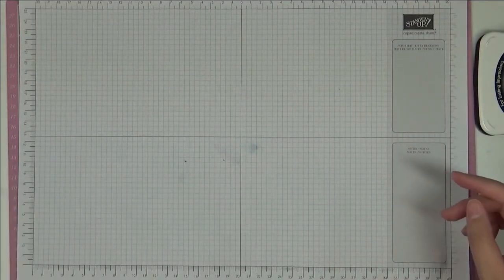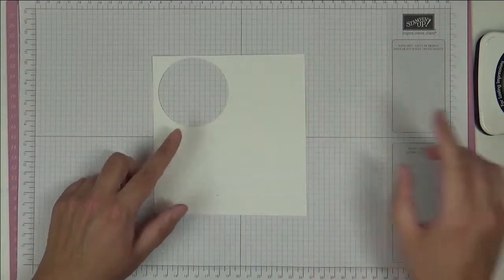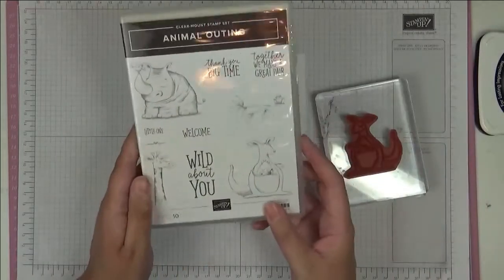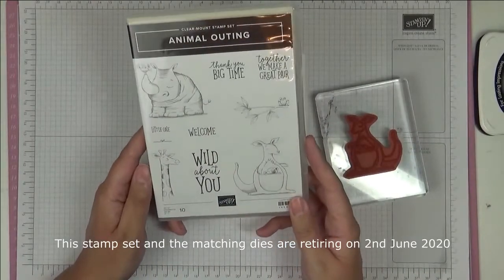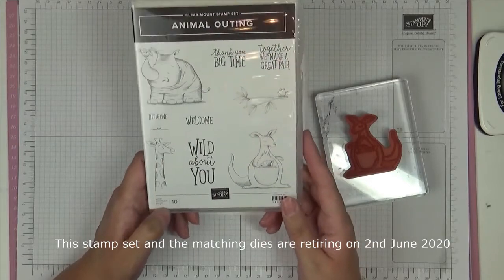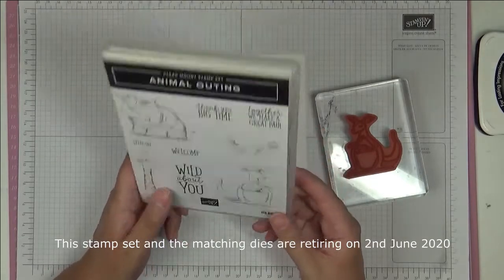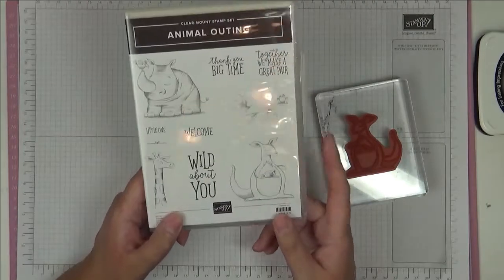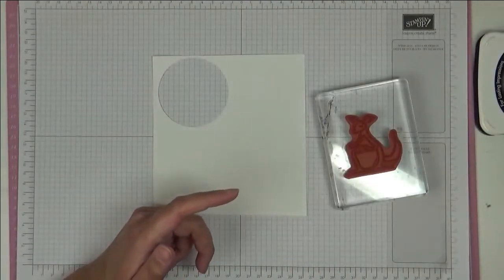So supplies you're going to need initially is some scrap of Whisper White and the stamp set we're going to be using is this one called Animal Outing. Now this has been in my stash for well over a year, and I've never used it. Bad, bad me. So I've changed that now and I'm using it, so I'm pleased about that.